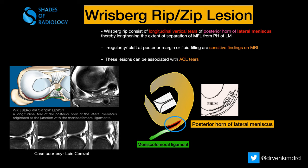In the axial image, you can see the tear here — this is the meniscofemoral ligament — and you can see the involvement of the posterior horn of the lateral meniscus. In the sagittal images as well, you can see the same tear, showing separation from the posterior horn of the lateral meniscus. This is the classic appearance.